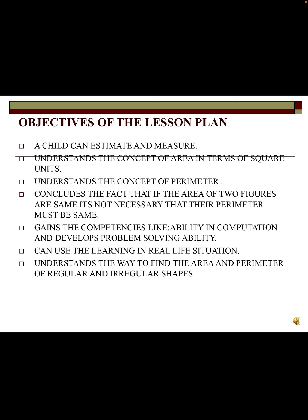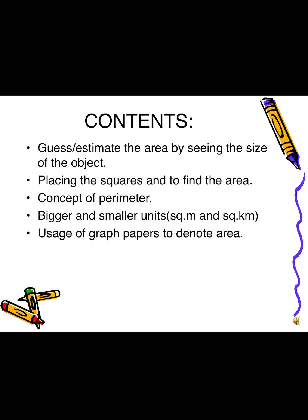The child understands the way to find the area and perimeter of regular and irregular shapes. Content matter includes: guessing or estimating the area by seeing the size of the object, placing squares to find the area, the concept of perimeter, bigger and smaller units like square meter and square kilometer, and usage of graph papers to denote area.